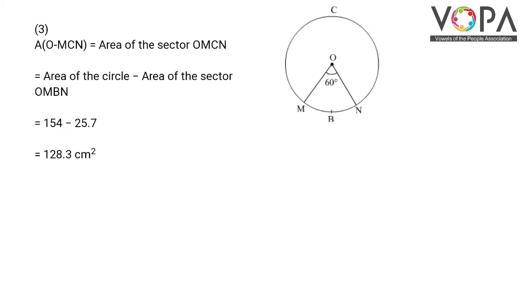Area of sector O-MCN equals area of circle minus area of sector O-MBN. Putting the values, we have 154 minus 25.7, which gives 128.3 cm square.